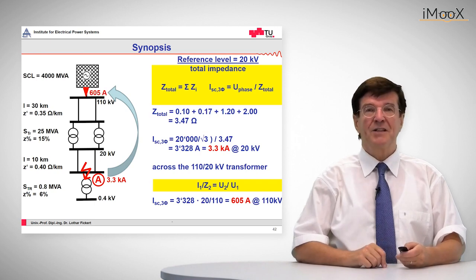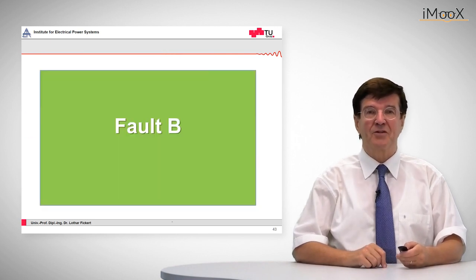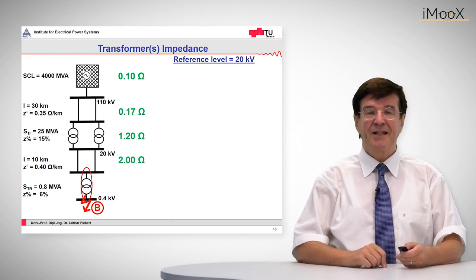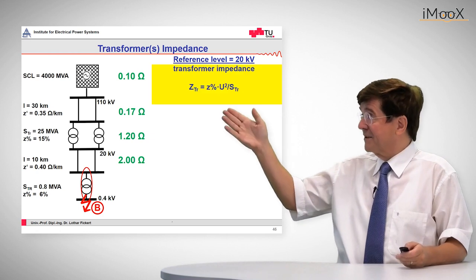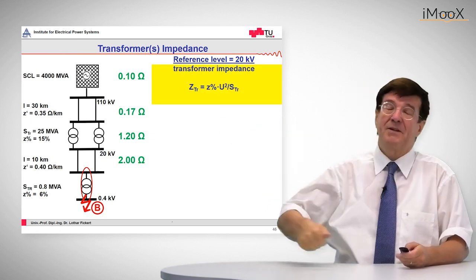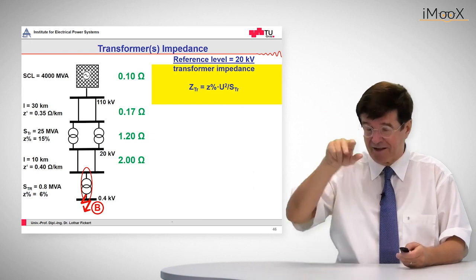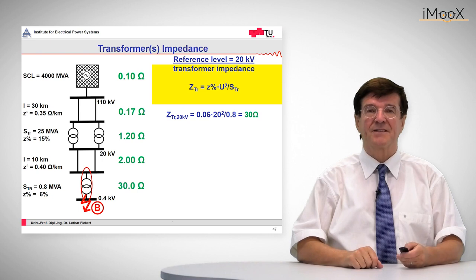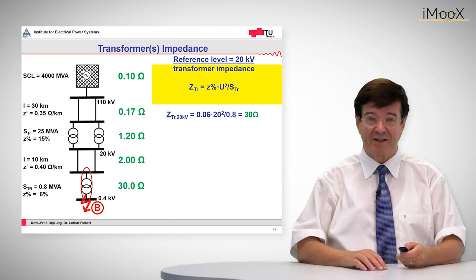The next one is fault B, which is the fault on the low voltage side of this distribution transformer. So again we calculate the impedance of the transformer, which is the product of the percentage impedance times U squared divided by the apparent power of the transformer, and the result is 30 ohms on the 20 kV level.